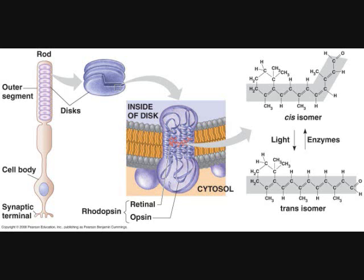Enzymatic restoration of 11-cis-retinal. After retinal has isomerized to 11-trans-retinal and opsin has changed shape, rhodopsin can no longer respond to light. Rhodopsin is broken down into opsin and retinal, and the 11-trans-retinal is converted enzymatically into 11-cis-retinal again. The retinal can then rebind with an opsin molecule to form a functional rhodopsin molecule.